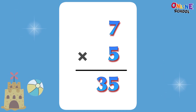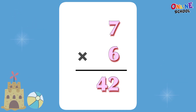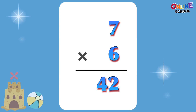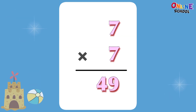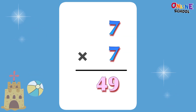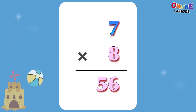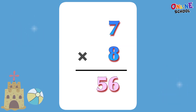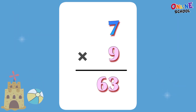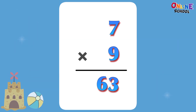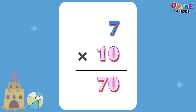7 times 1 equals 7. 7 times 2 equals 14. 7 times 3 equals 21. 7 times 4 equals 28. 7 times 5 equals 35. 7 times 6 equals 42. 7 times 7 equals 49. 7 times 8 equals 56. 7 times 9 equals 63. 7 times 10 equals 70.